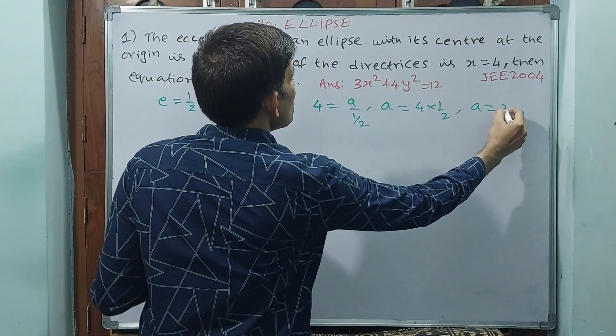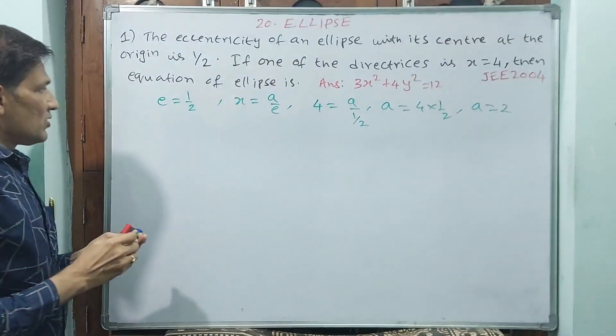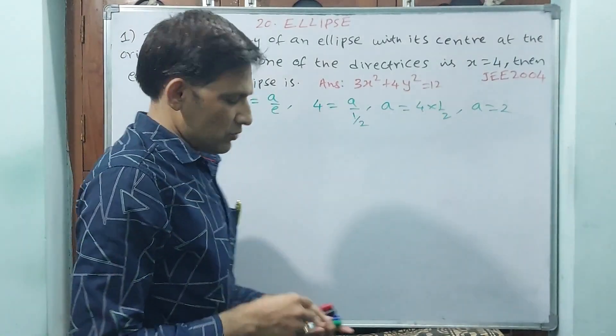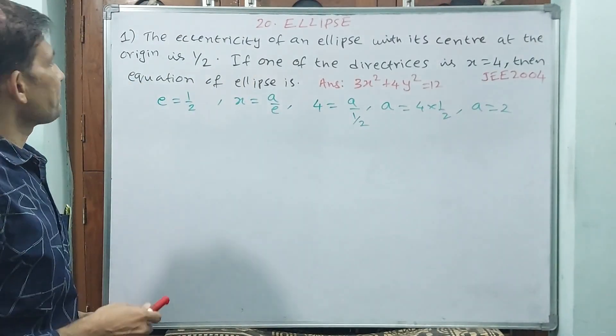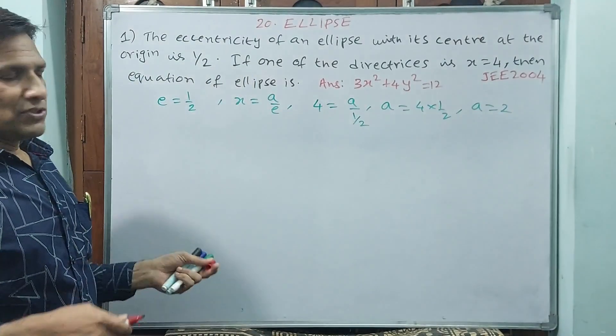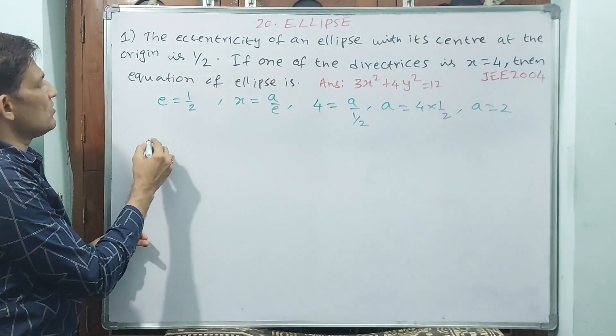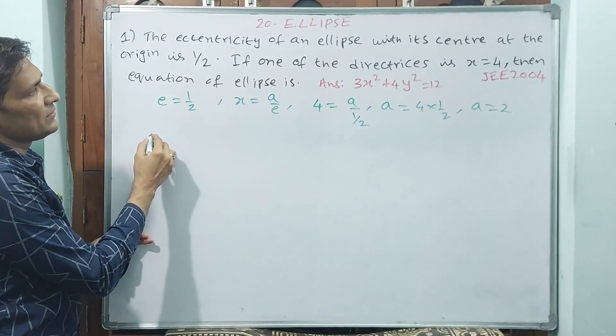a equals 2. That means we are having a and e both. Now come back. Now equation of ellipse. See, equation of ellipse, what is the equation of ellipse? Equation of ellipse is like this you see.